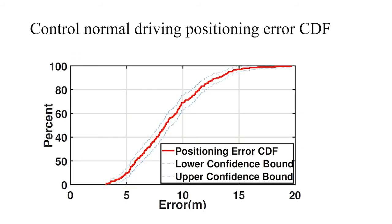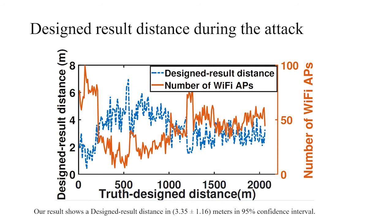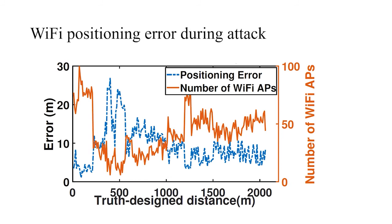The CDF shows the majority of the error is below 15 meters. Now we want to check the evaluation metrics during the attack. First, we check the designed result distance. This figure shows we observe a designed result distance of 3.35 ± 1.16 meters. For the WiFi positioning error during the attack, the standard error is 9.26 ± 8.53 meters, which is not significantly different with the normal control driving data we presented before. The p-value is 0.28.